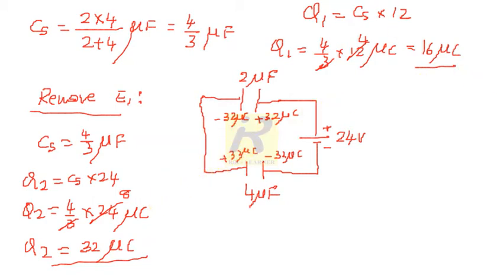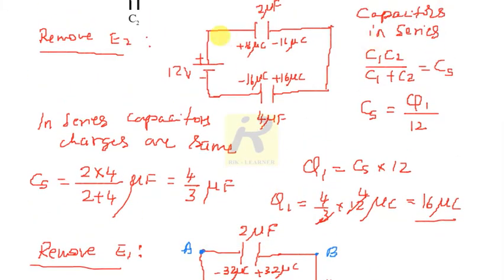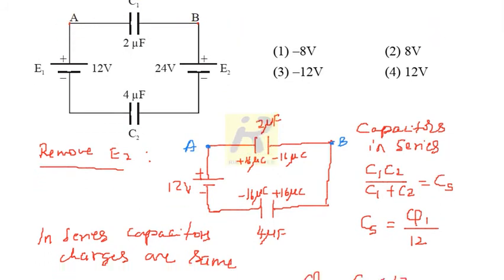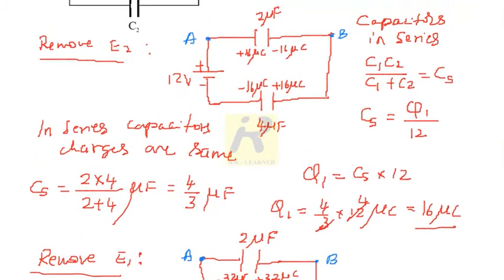Since the positive terminal of E2 is here, this plate processes +32 microcoulombs and the second plate is −32 microcoulombs. The bottom plate is negative (the terminal of the battery is negative here), so it is −32 microcoulombs and the upper plate is +32 microcoulombs. Now we focus on terminals A and B — here is A and here is B in the given circuit.